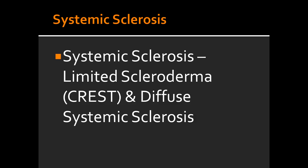What are the antibodies associated with CREST Syndrome? CREST Syndrome is associated with Anticentromere Antibody. What are the antibodies associated with Diffuse Systemic Sclerosis? The antibody associated with Diffuse Systemic Sclerosis is Anti-SCL-70, which is Topoisomerase-1.